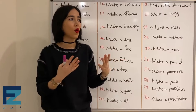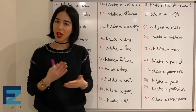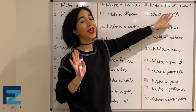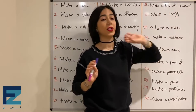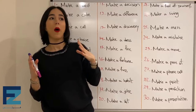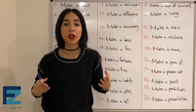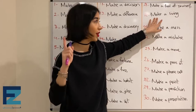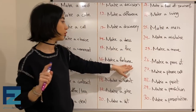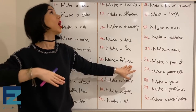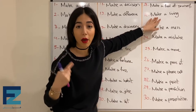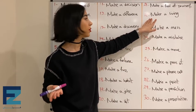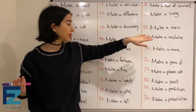Number twenty-two: make a living. Make a living means to earn enough money to live. به اندازه‌ای که بتونی زندگی کنی پول در بیاری — this is different from make a fortune which means to earn a lot of money.